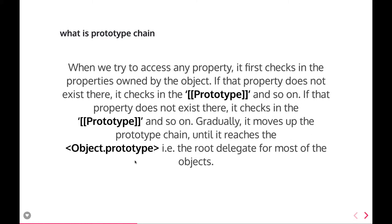What is a prototype chain? When we try to access any property, JavaScript first checks if the property is owned by the object itself. If it doesn't exist there, it checks the prototype, and so on — moving up the prototype chain until it reaches Object.prototype, which is the root object in JavaScript.